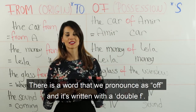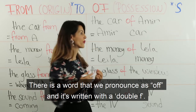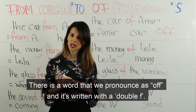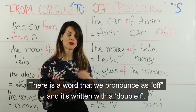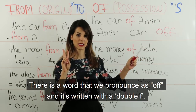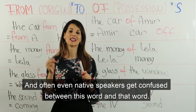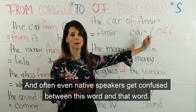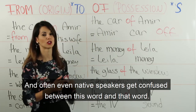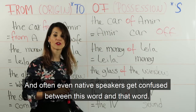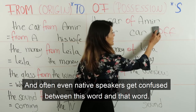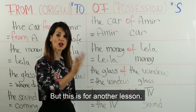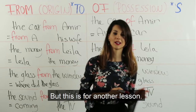There is a word that we pronounce as 'of' but it's written with a double F. And often even native speakers get confused between this word and that word. وأوقات كتير حتى الناطقين الأصليين بيتلبكوا بين هالكلمة وهالكلمة. But this is for another lesson. ولكن هالشي لدرس آخر.